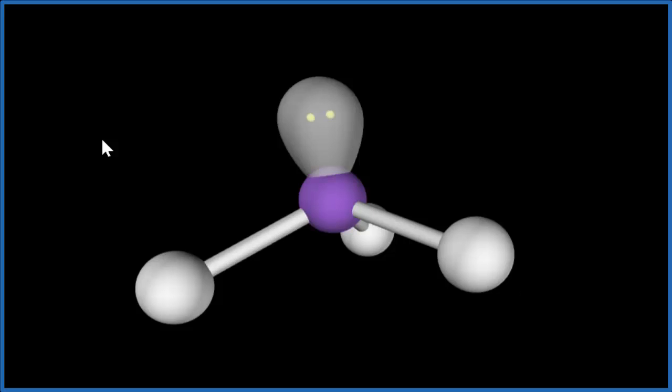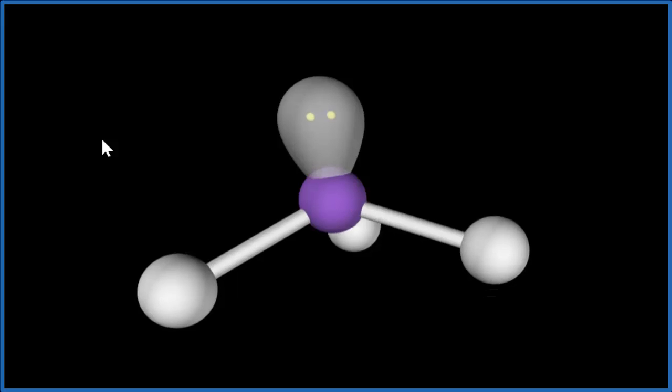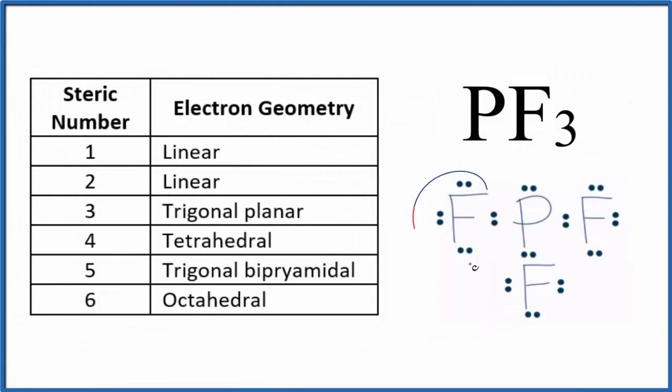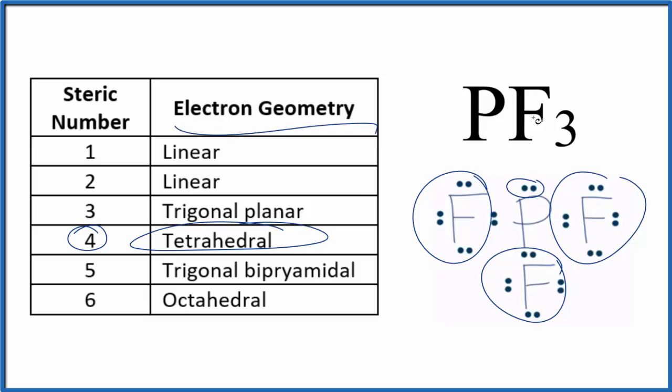Let's put the lone pair back and let's go back to our Lewis structure. So to recap, we have one, two, three atoms and a lone pair, four things. Steric number is four. Tetrahedral electron geometry for PF3.